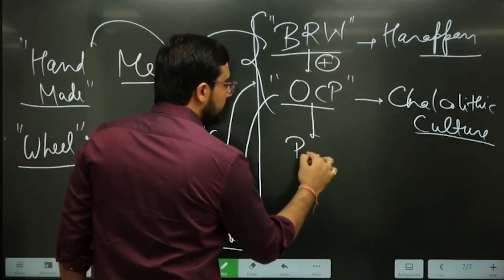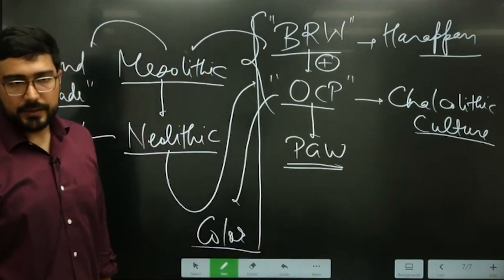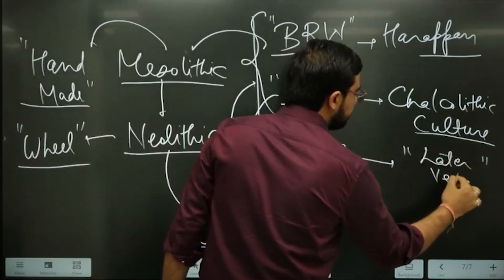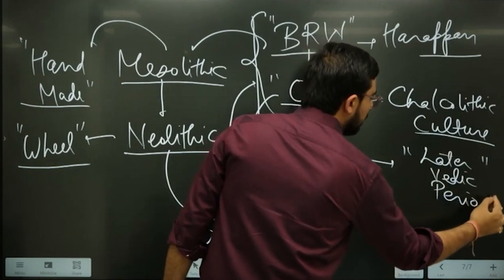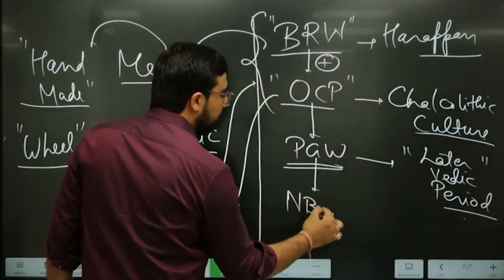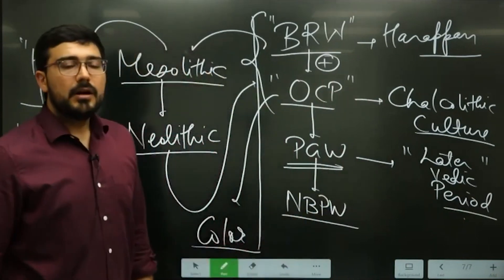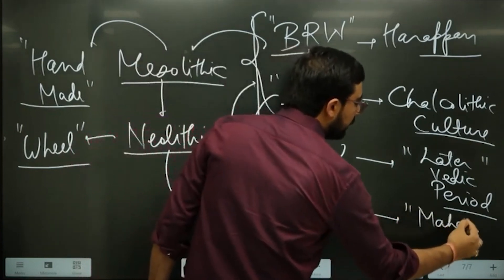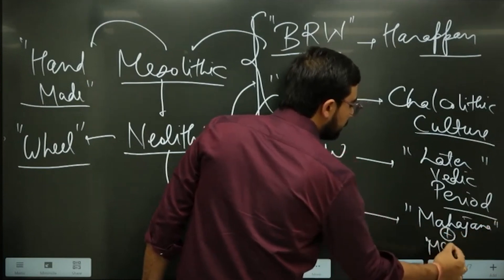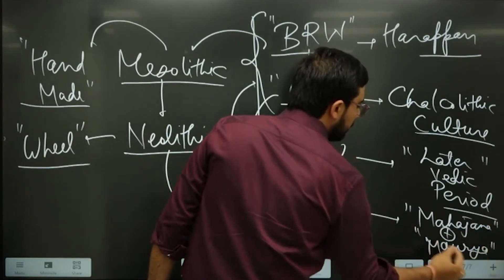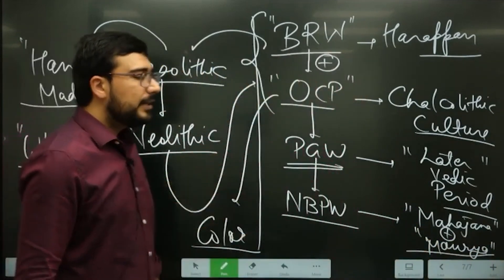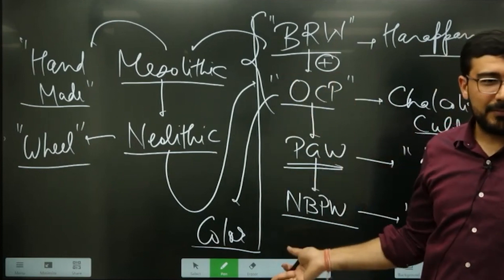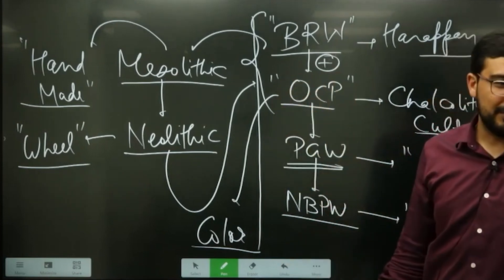The next phase of pottery is PGW — Painted Grey Ware. This belongs to the later Vedic period. After that comes NBPW — Northern Black Polished Ware — which is associated with the Mahajanapada period as well as the Mauryan period. These are the four key pottery terms to remember: Black and Red Ware, OCP, PGW, and NBPW.